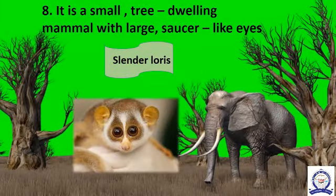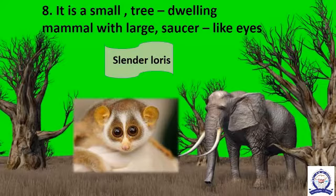The last question: it is a small tree-dwelling mammal with large saucer-like eyes. It is mainly found in the tropical forests of South India. The answer is Slender Loris.